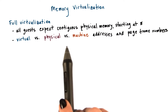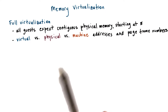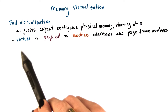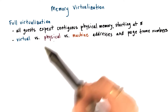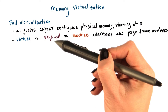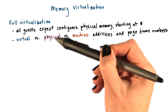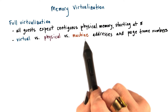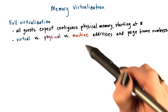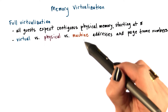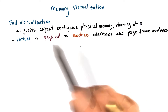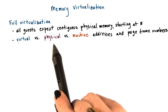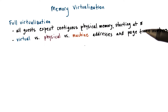To achieve this, we distinguish among three types of addresses. Virtual addresses — these are the ones used by applications in the guest. Physical addresses — these are the ones the guest thinks are the addresses of the physical resource. And machine addresses — these are the actual physical addresses on the underlying platform. This same distinction of virtual versus physical versus machine also applies to page numbers and page frame numbers.